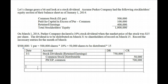On March 15th, the date of record, there is no journal entry. Then on March 31st, we distribute the stock: we remove the Common Stock Distributable account and replace it with the actual Common Stock account for $50,000. Common Stock Distributable is not a liability — it's part of stockholders' equity kept separate to show shares not yet handed out. Hopefully this clears up the journal entries for cash and stock dividends.